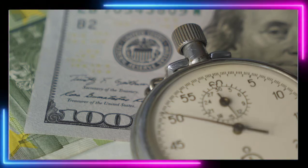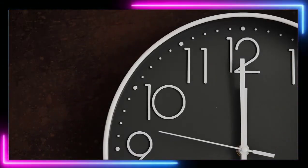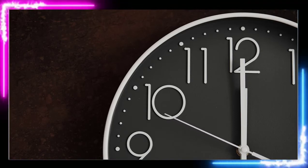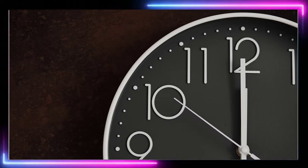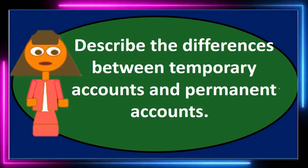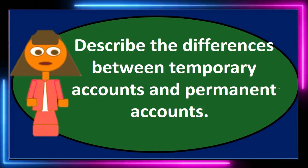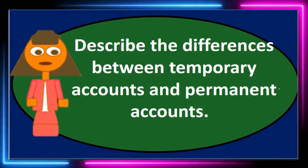Permanent accounts, on the other hand, will remain at all times unless they are zero, as long as the underlying factors are still there. As long as we still have the assets, liabilities, and equity related to them, they will remain and not be zeroed out at any time during the accounting process.